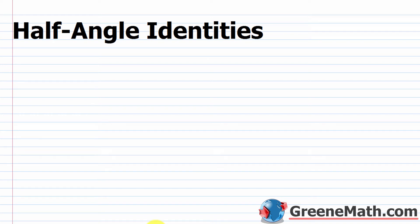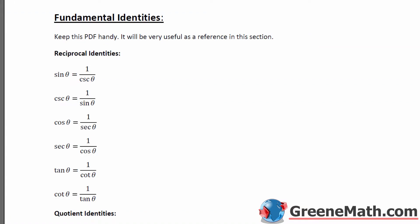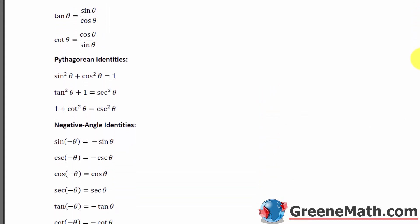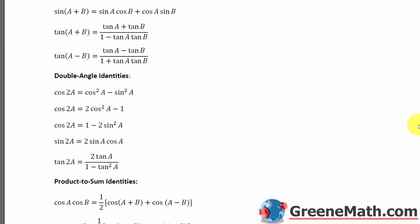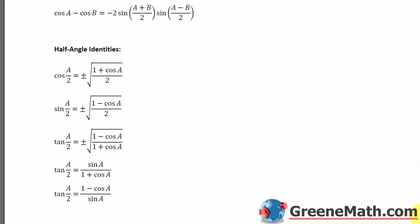In this lesson, we want to talk about the half-angle identities. We're going to wrap up our section on the trigonometric identities and get ourselves prepared for solving trigonometric equations. But before we do that, we need to talk about these half-angle identities. Let me go back to our handout where we have all of our trigonometric identities listed. We'll come all the way down to where we have these half-angle identities.